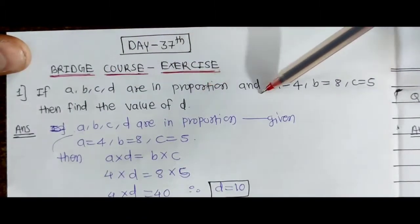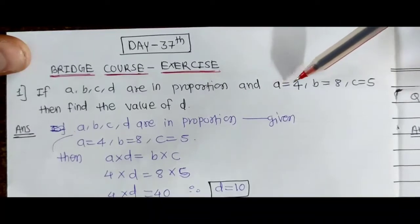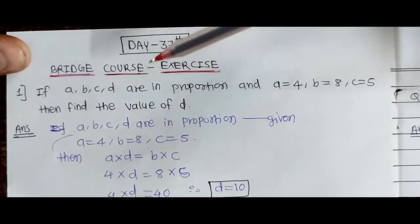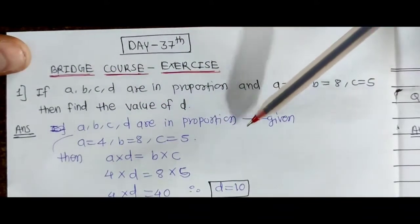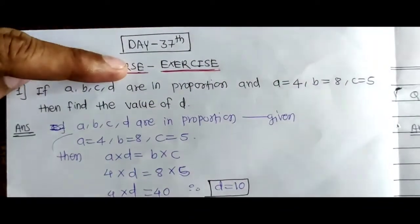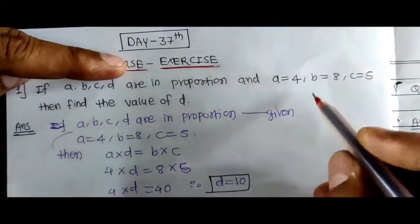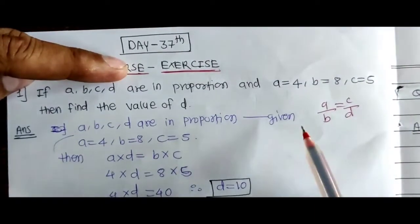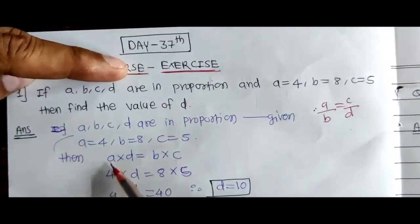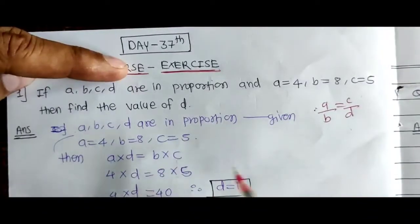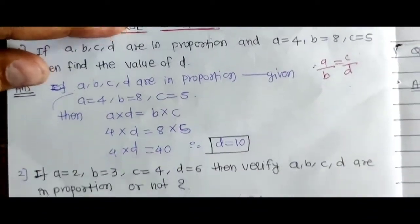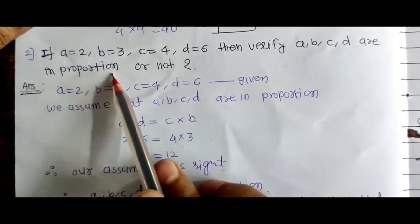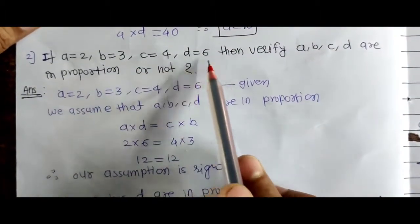The value of a equals 4, b equals 8, c equals 5 — then find the value of d. Proportion mein hota hai a by b equal to c by d. Toh iska cross multiplication karo: a into d equal to b into c. Value put karo toh d ki value milegi — d ki value 10 aayegi.